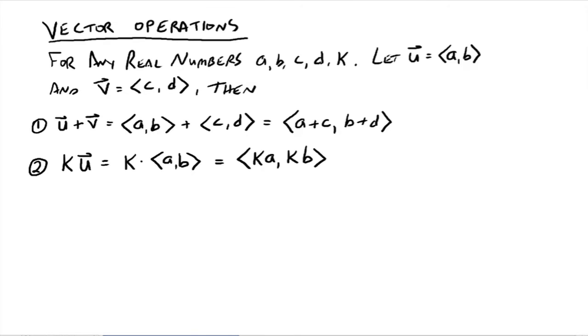Now there's some operations that we can do on vectors. Let's let a, b, c, d, and k just be real numbers. Let's define u to be the vector a comma b, and vector v as c comma d. Then if you add the two vectors u plus v, that'd be a comma b plus c comma d. If you add those together, then that goes to the vector a plus c comma b plus d. You add the two horizontal components of the vectors, and then the two vertical components. That's vector addition algebraically, whereas the last video we talked about it geometrically.